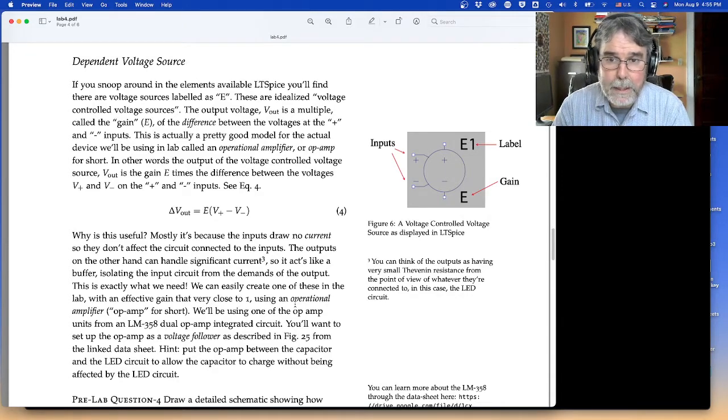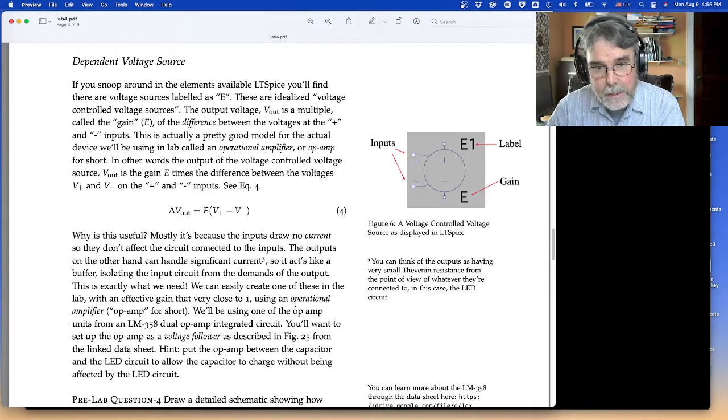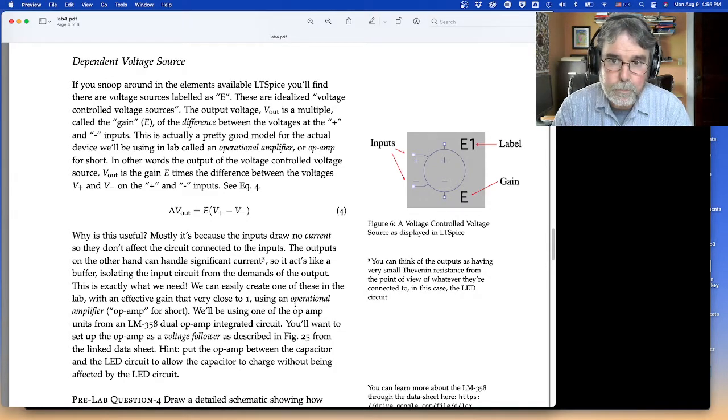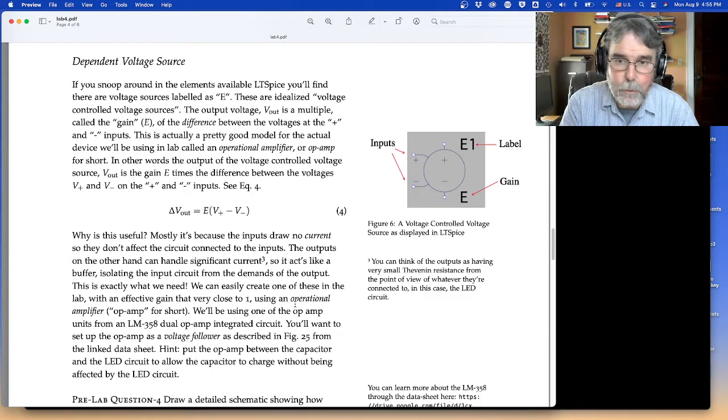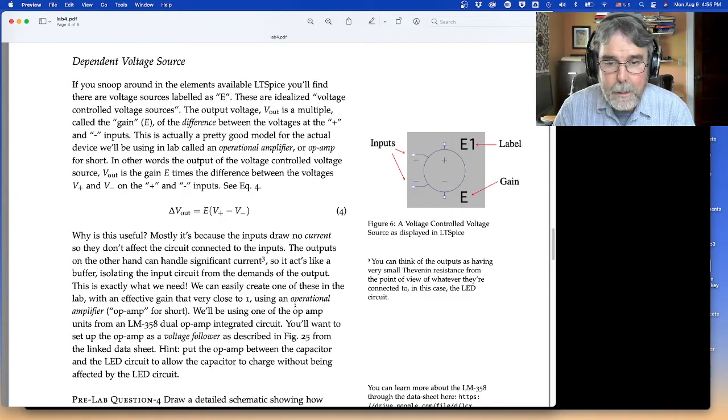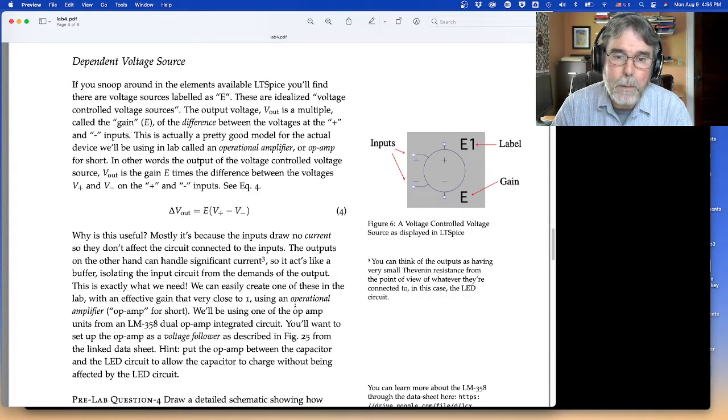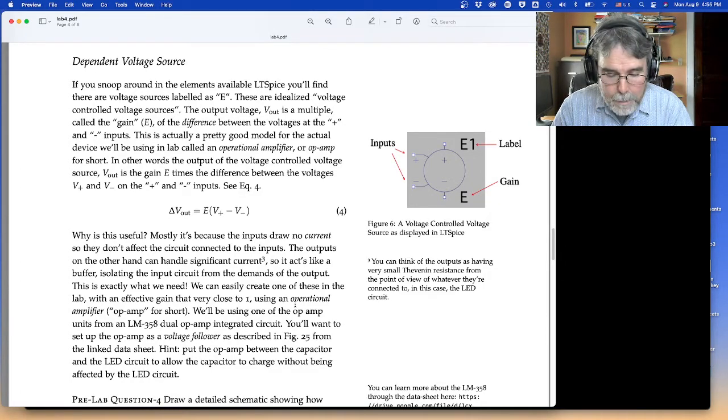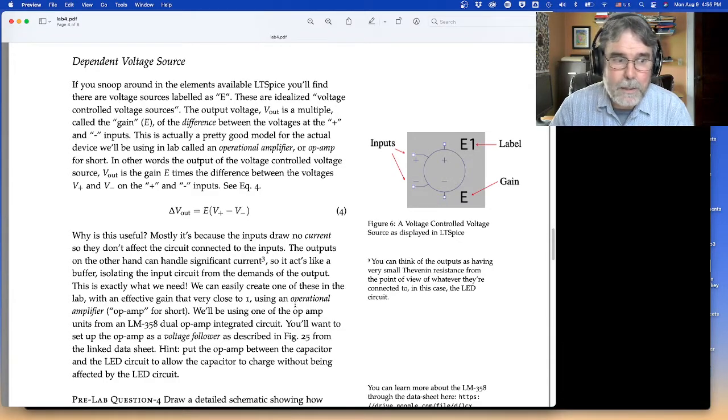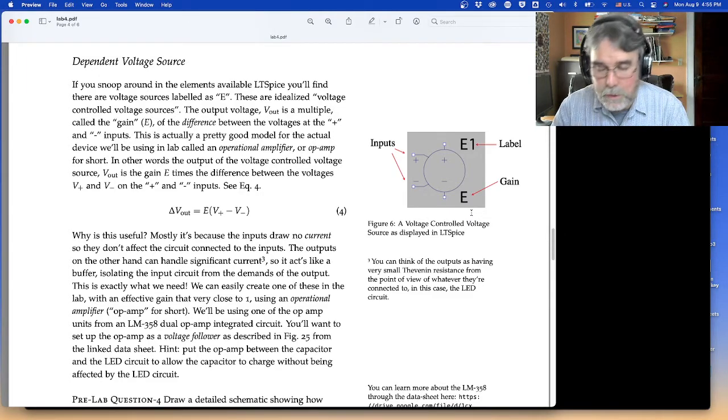And so what we did was we put an op amp between the capacitor and the diode to act as a buffer. And we modeled that as a voltage-dependent voltage source, a voltage source whose voltage output depended on some other voltage difference in the circuit. But then we implemented it as an op amp. So what I want to do is talk about how do you model an op amp? We were using an op amp to make a voltage-controlled voltage source with a gain of 1. So in LTSpice, we would set the gain E to 1, and then we simply used it directly.